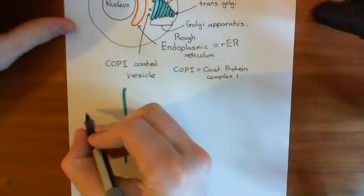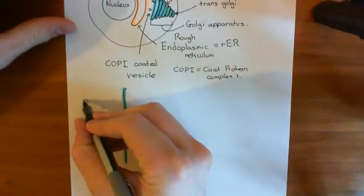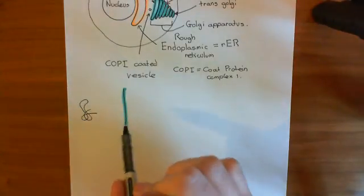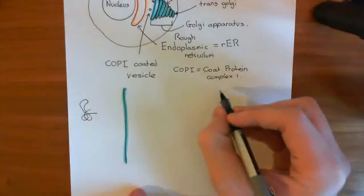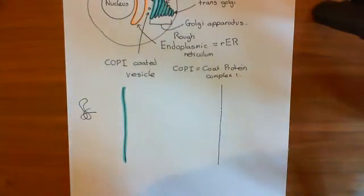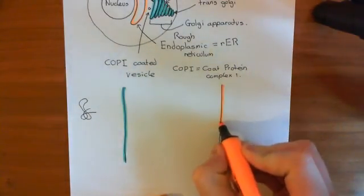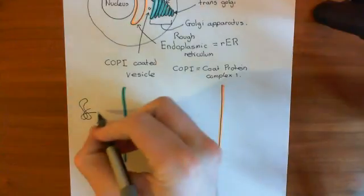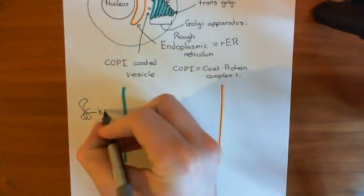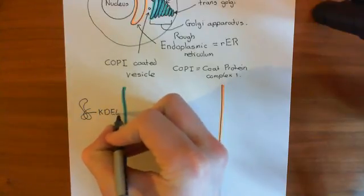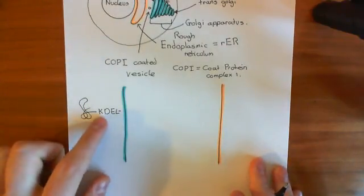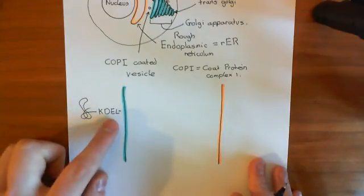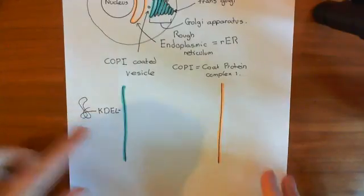If a protein in the lumen of the cis-Golgi needs to be transported back to the ER, it will have a specific sequence of amino acids that tells the Golgi it needs to go to the ER. This specific sequence is known as the KDEL sequence — K-D-E-L. It's called the KDEL sequence because K, D, E, and L are the single-letter amino acid codes for the amino acids in this sequence. We'll continue this discussion in the next video.